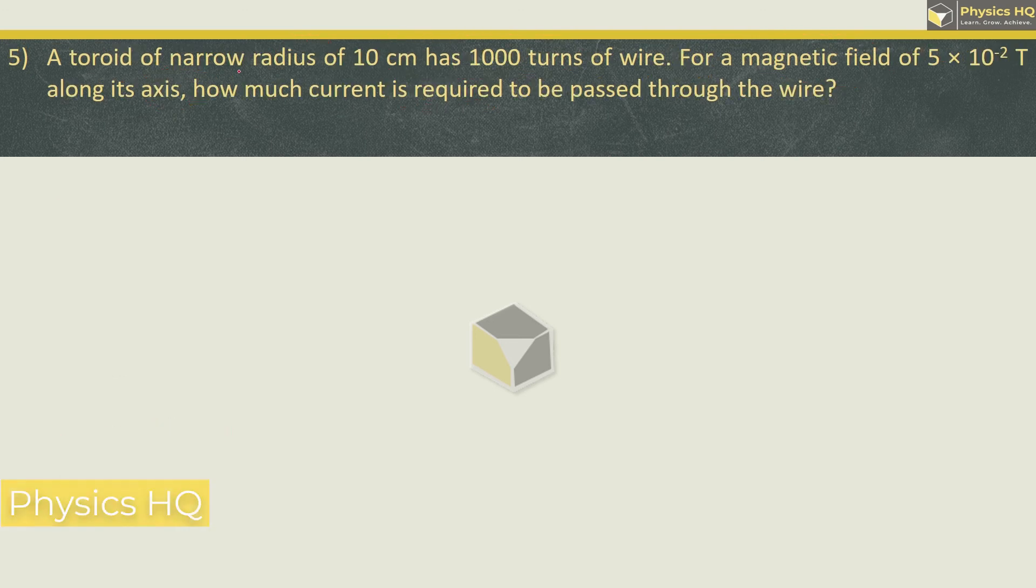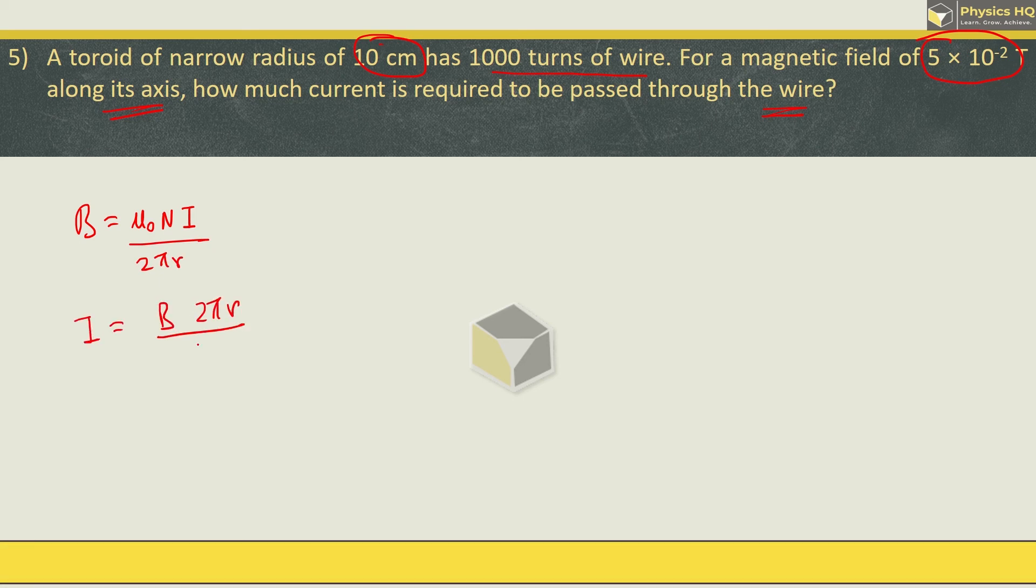Next, a toroid of narrow radius of 10 cm has 1000 turns of wire. The magnetic field of 5 × 10⁻² tesla along its axis. How much current is required to be passed through the wire? Here magnetic field is given by μ₀ n I divided by 2πr. So current formula is B into 2πr divided by μ₀ into n. B is 5 × 10⁻² into 2π, radius is 10 cm which is 0.1 meter divided by 4π × 10⁻⁷ into number of turns 1000.